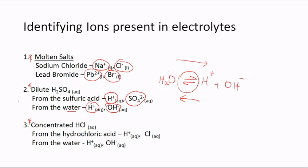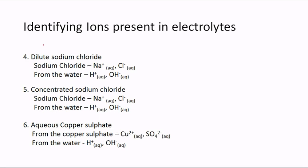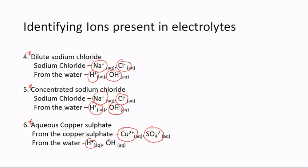In concentrated hydrochloric acid we have H⁺ and Cl⁻ ions, plus H⁺ and OH⁻ from water. In dilute sodium chloride we have Na⁺, Cl⁻, H⁺ and OH⁻. In concentrated sodium chloride it is the same — Na⁺, Cl⁻, H⁺ and OH⁻. In copper(II) sulfate solution we have Cu²⁺, SO₄²⁻, and again H⁺ and OH⁻ from water.